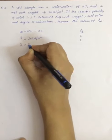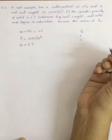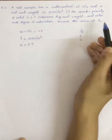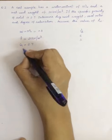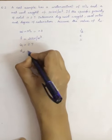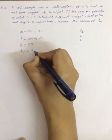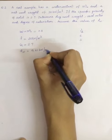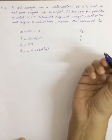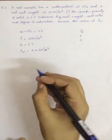And the wet unit weight gamma is given as 20 kilo Newton per meter cube. G is equal to 2.7, that is specific gravity of the solid. Assume the value of gamma w, the unit weight of the water, which is a standard value: 9.81 kilo Newton per meter cube.